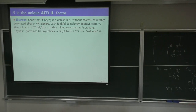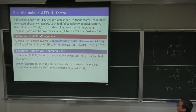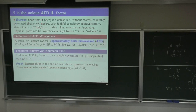What I want to end with before taking a pause is to point out this theorem of Murray–von Neumann. First observation — and this is a trivial exercise: if A is an abelian von Neumann algebra with no minimal projections (diffuse) and a normal faithful state, then it is isomorphic to L^∞([0,1]) with the Lebesgue measure.